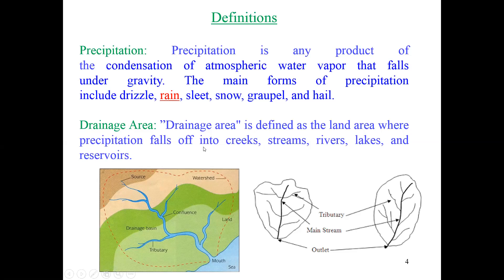The next term is drainage area. Looking at this picture of a watershed, you can see there is one mainstream and some tributaries — the same applies here, with a mainstream and some tributaries forming the river or canal system. The whole thing is called the drainage area, defined as the land area where precipitation falls off into creeks, streams, rivers, lakes, and reservoirs. It is the area we consider to calculate the total runoff.